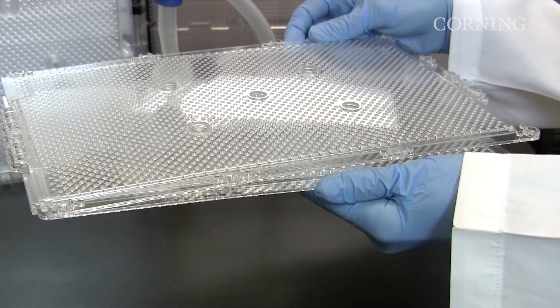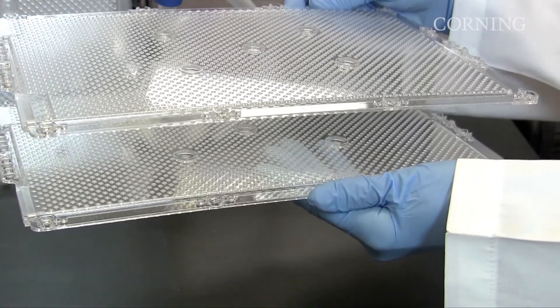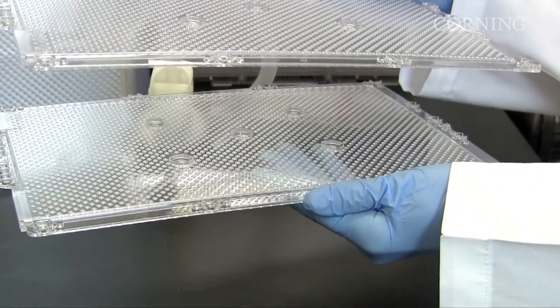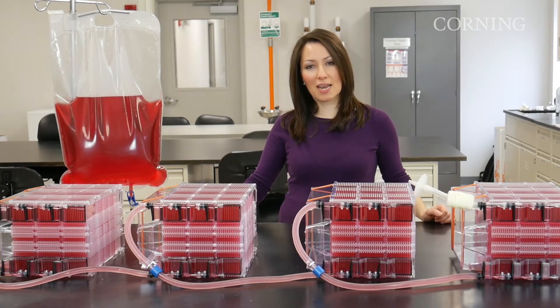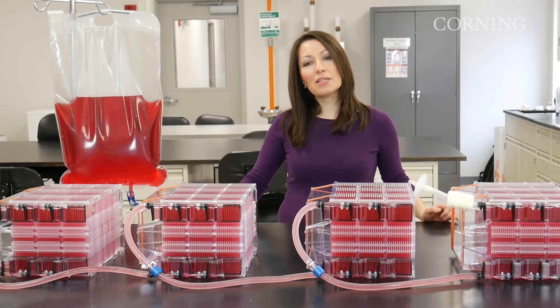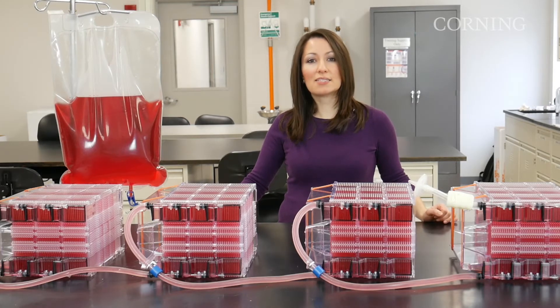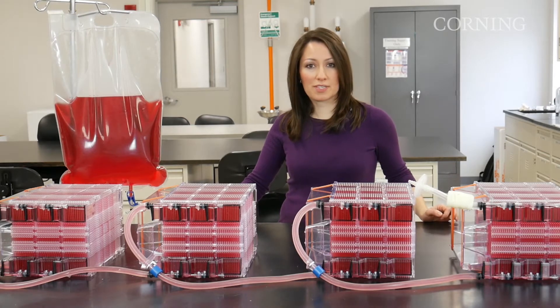The arrangement of layers within the vessel substantially increases cell yields per cubic inch. For those who need significant cell yields, a manifolded setup is best. You can typically grow 2 billion cells in a single 36-layer HyperStack.